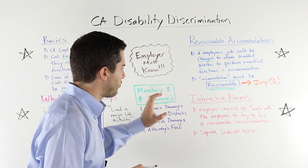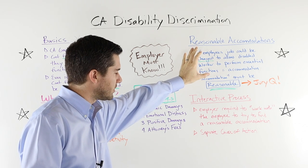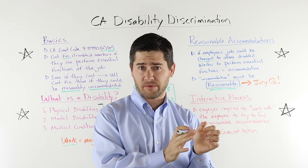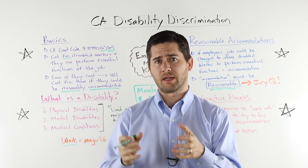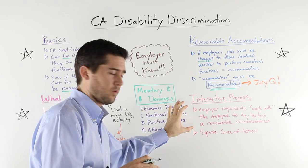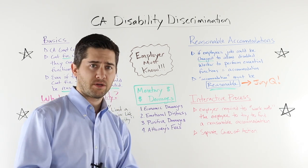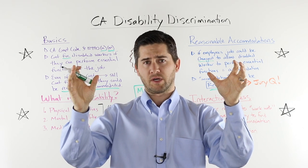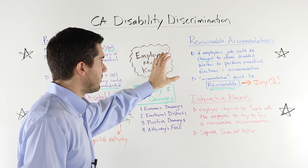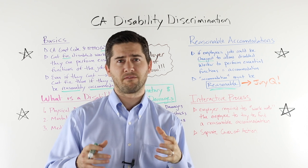Next, let's discuss the interactive process. At its basic level, this is really simple. If you're disabled and you request a reasonable accommodation, the employer is required to consider it and work with you. If your requested accommodation doesn't work for them, they're required to try to help find an accommodation that would work so you can continue working. If they don't help you or work with you, you can also sue them for failing to engage in the interactive process — it's its own cause of action. Under this umbrella of disability discrimination, there are actually three separate causes of action: disability discrimination, failure to provide a reasonable accommodation, and failure to engage in the interactive process. The three of those combined make a very powerful lawsuit.